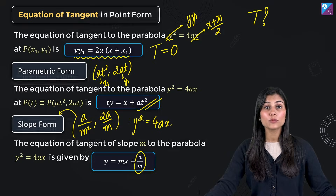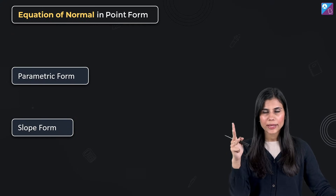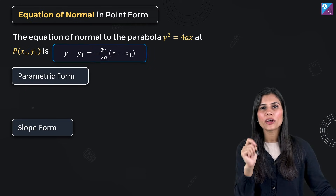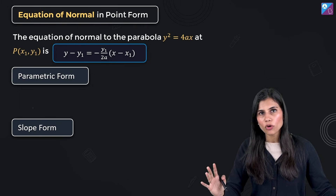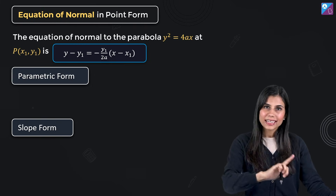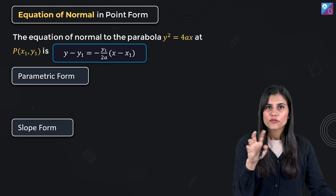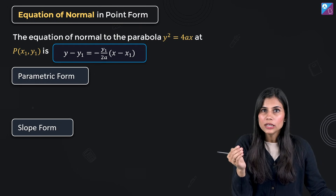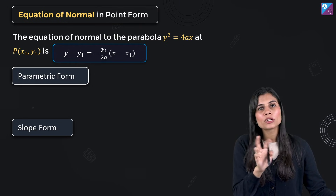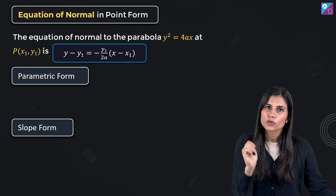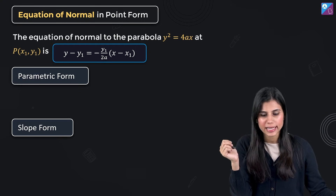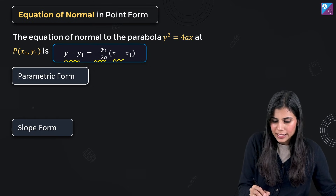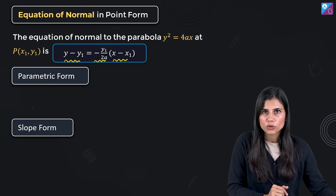After tangent, we move on to normal. The equation of normal is also studied in three forms: point form, parametric form, and slope form. In point form, first write the equation of tangent in point form to get the slope of the tangent; its negative reciprocal gives the slope of the normal. Using the point-slope form gives the equation of normal at (x1, y1) to y² = 4ax as: y - y1 = (-y1/2a)(x - x1).